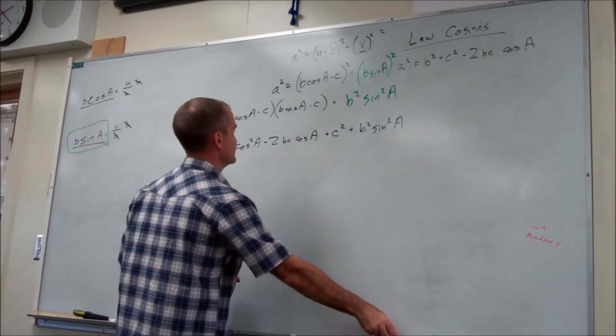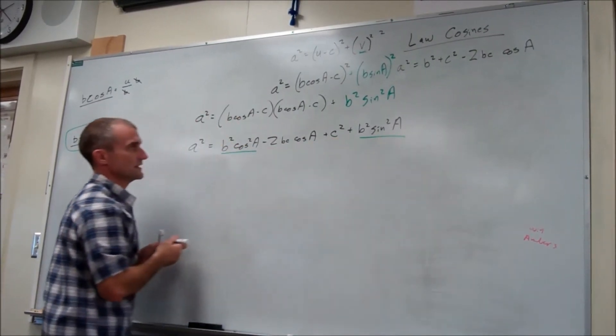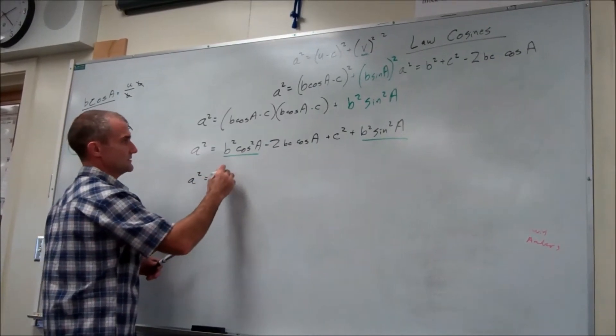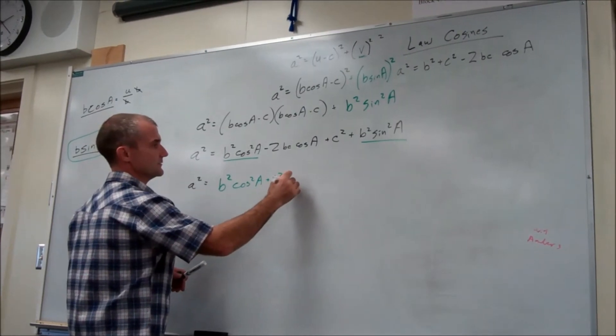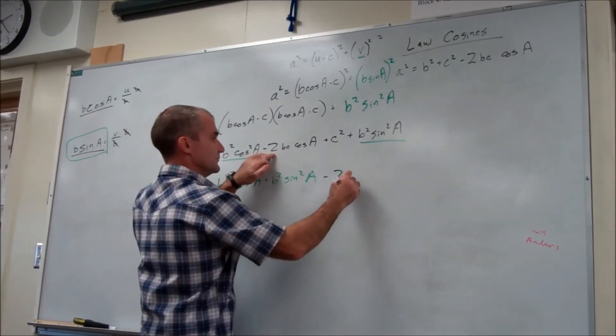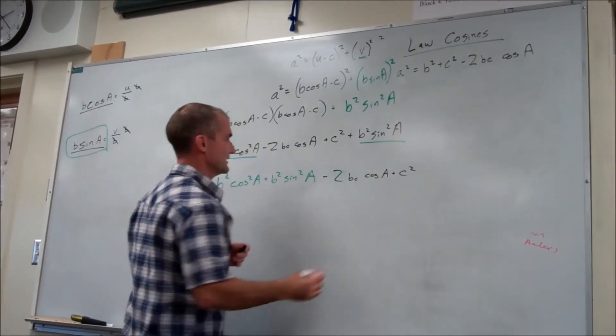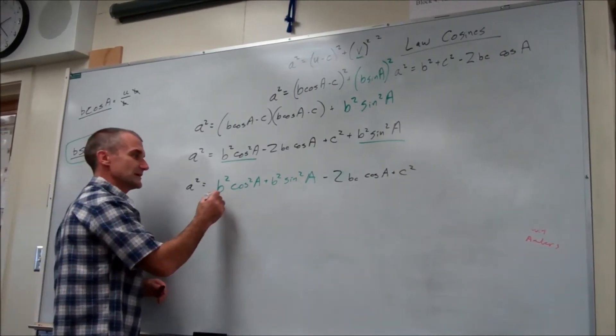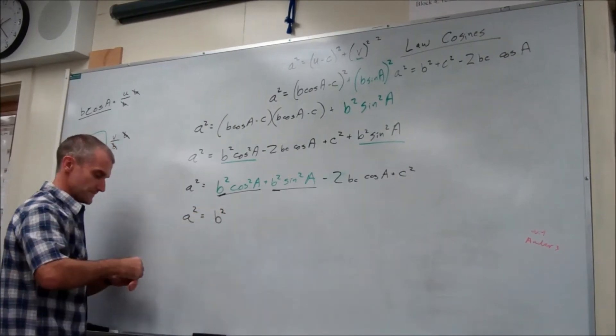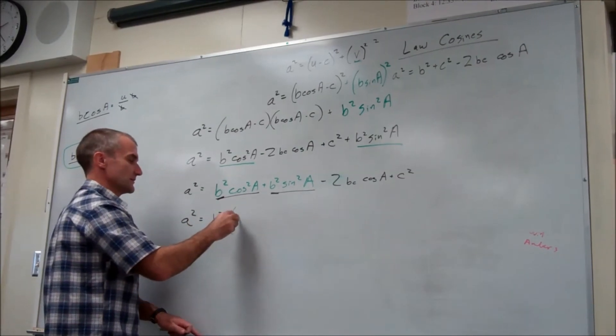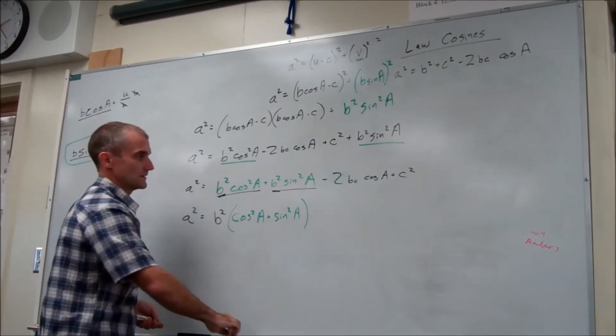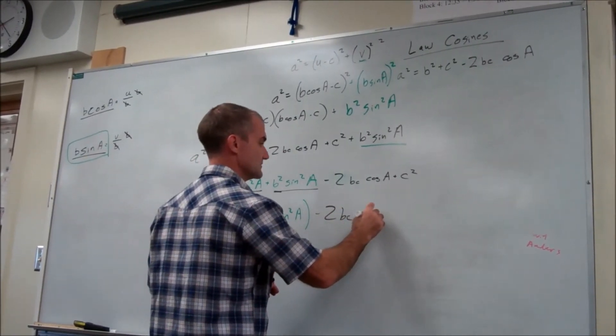All I'm going to do right now is I'm just going to move these next to each other. So I'm going to put this one and this one next to each other. So I have a squared is equal to b squared cosine squared of a plus b squared sine squared of a, and then I have minus two bc cosine of a plus c squared. Now I have a common term just in this and this. That common term is b squared. So I'm going to factor that b squared out. So I have a squared equals b squared, I'm pulling a b squared out of these two terms, so I'm left with cosine squared of a. And I pull b squared out of this, plus sine squared of a, minus two bc cosine of a plus c squared.